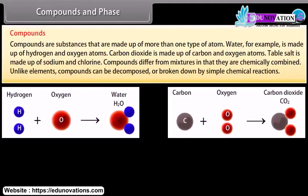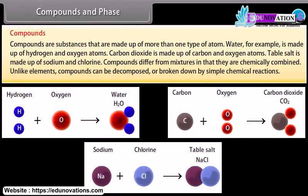Compounds are substances that are made up of more than one type of atom. Water, for example, is made up of hydrogen and oxygen atoms. Carbon dioxide is made up of carbon and oxygen atoms. Table salt is made up of sodium and chlorine. Compounds differ from mixtures in that they are chemically combined. Unlike elements, compounds can be decomposed or broken down by simple chemical reactions.